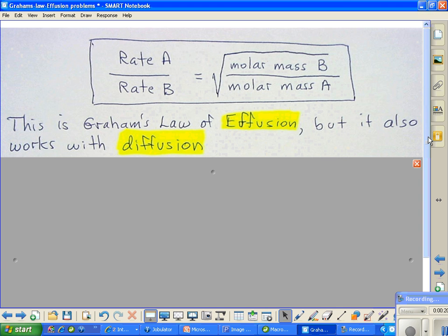Graham's Law of Effusion is in the box at the top, where we have the rate of A over the rate of B, is inversely proportional. That means what's on the top up here is on the bottom down here. And likewise, what's on the bottom here is going to be inversely proportional, which means that the B will be on top here and on the bottom here.